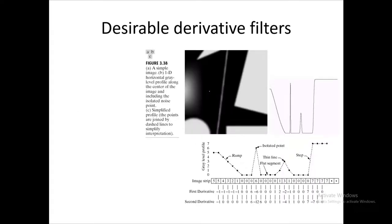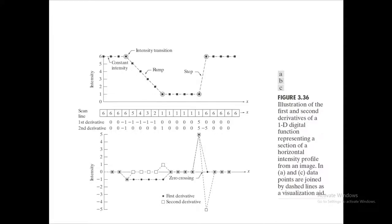Looking at the intensity profile in more detail, the circles indicate the onset or end of the intensity transitions, and the intensity values along the contour are denoted by small squares. The scan line consists of intensity values along these points, and we can see the first and second derivatives of this scan line.